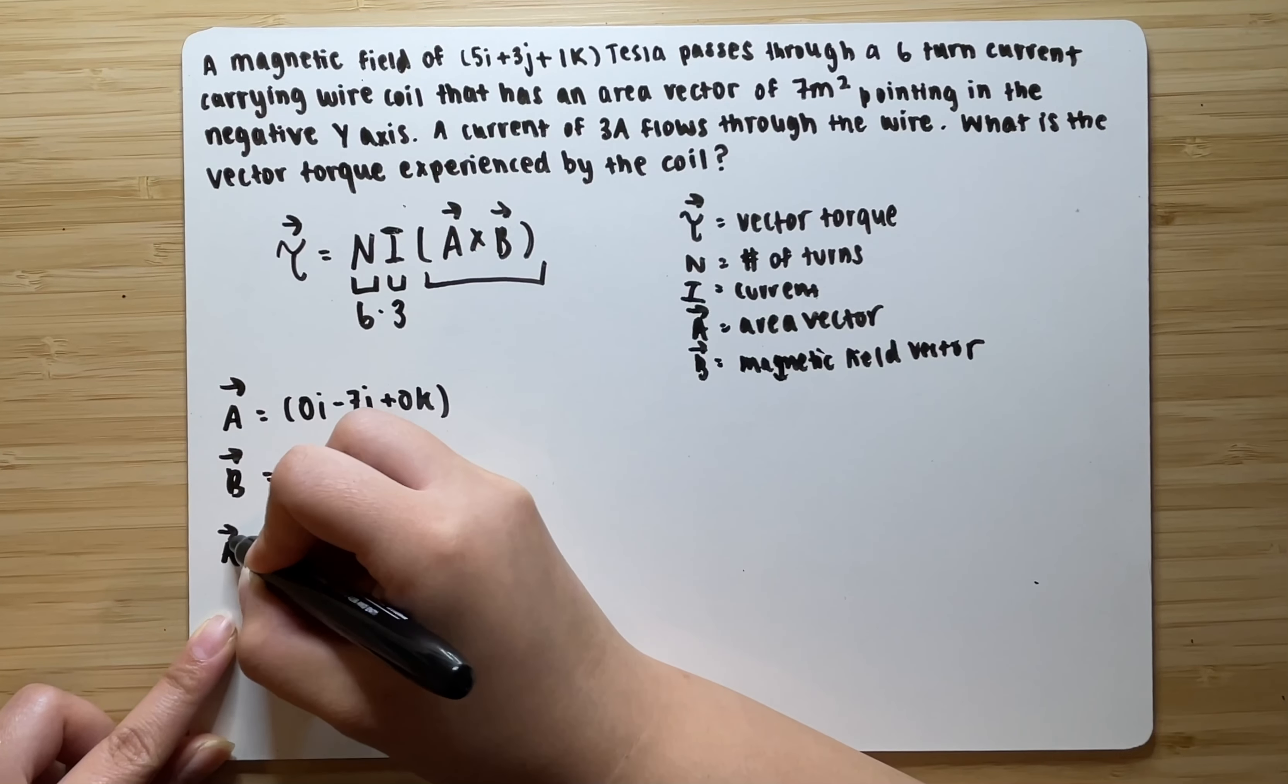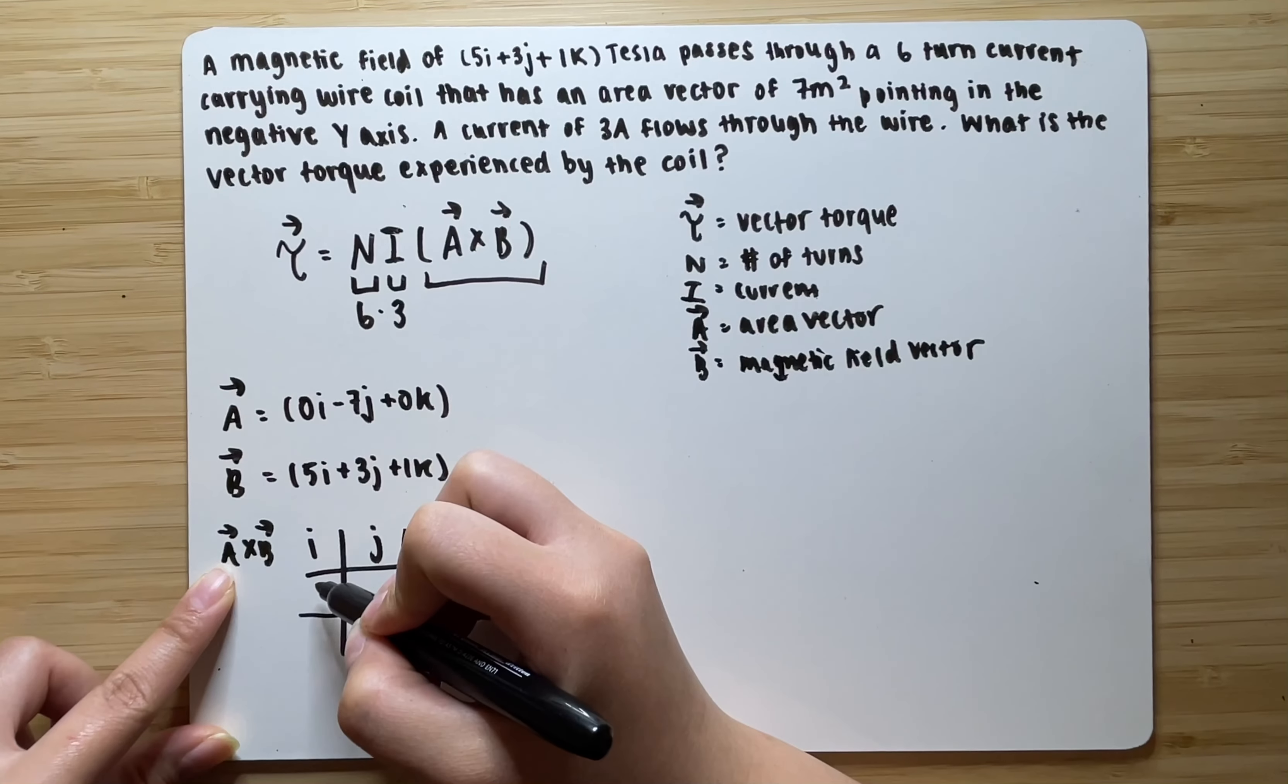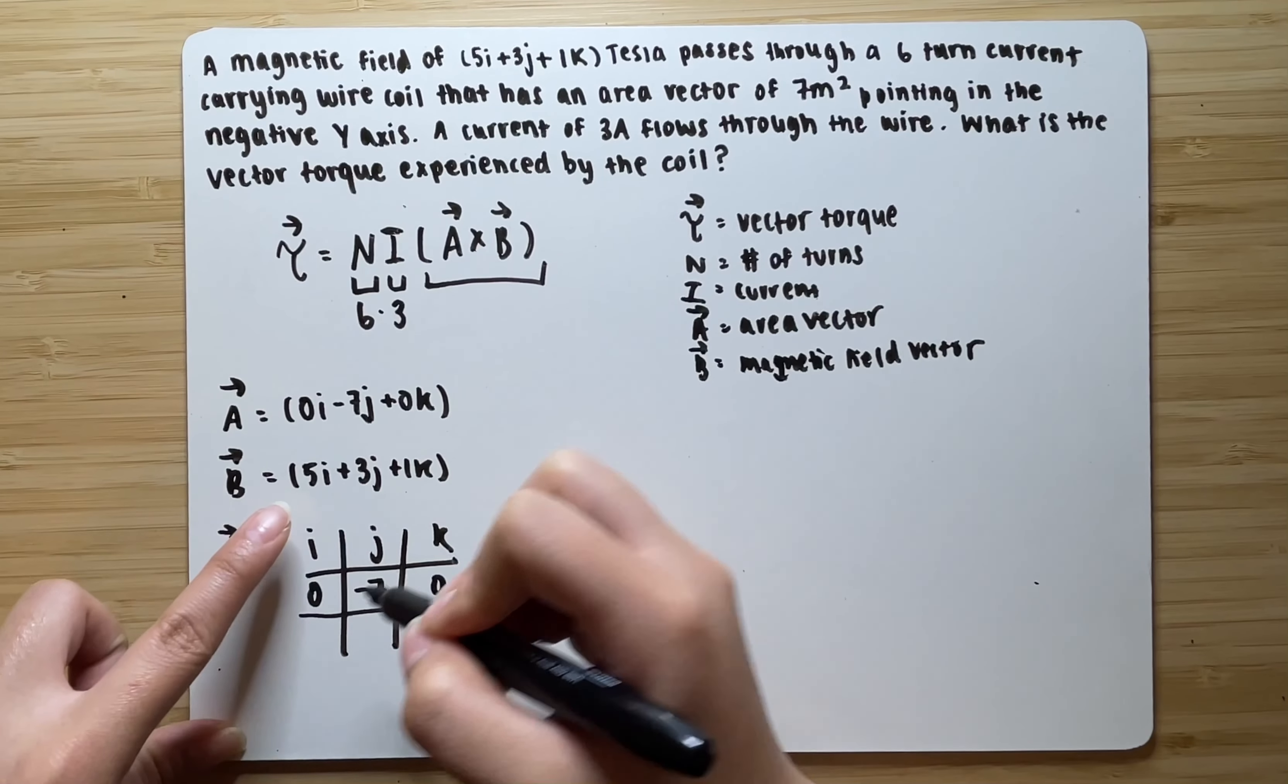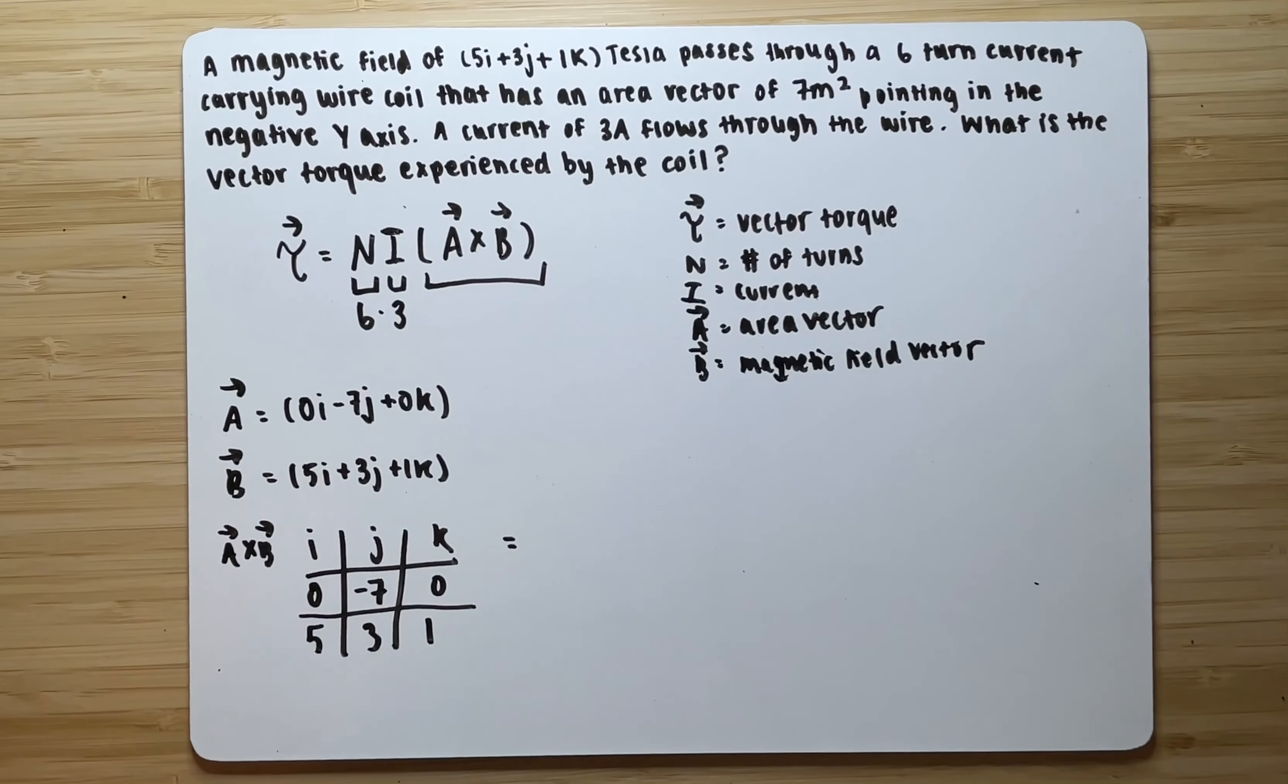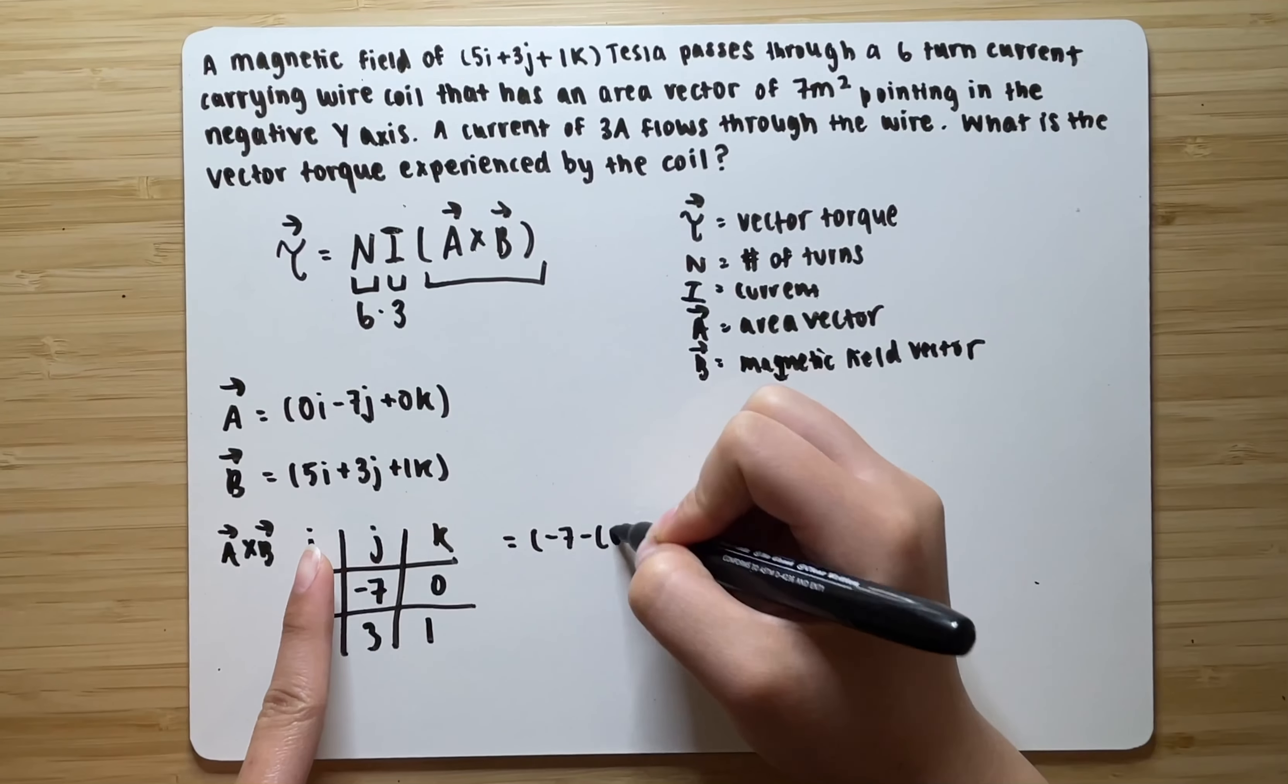With this information, we can find the cross-product of the two. So we can set up our ijk. A will be in the first level. So our i component for A is going to be 0, j component for A is going to be negative 7, and k component for A is 0. For B, our i component is 5, j component is 3, and k component is 1. Now we have to find the cross-product of the two. To find the i component of the cross-product, we need to cover the i. Multiply negative 7 by 1, you get negative 7 minus 3 times 0 is 0. So, this is our i.